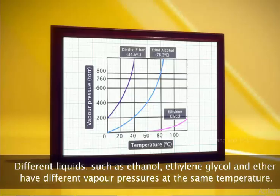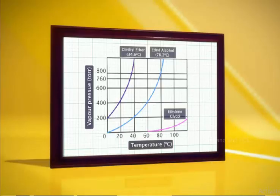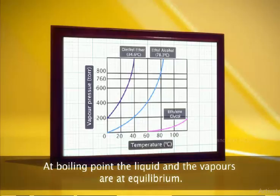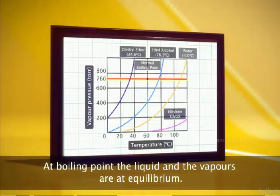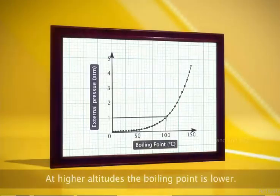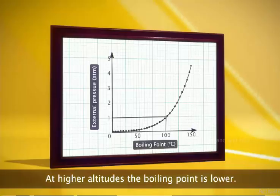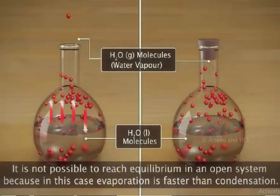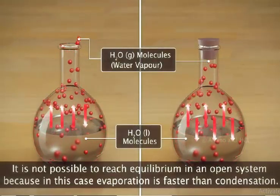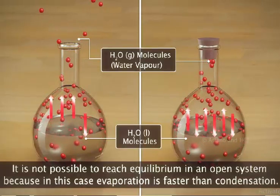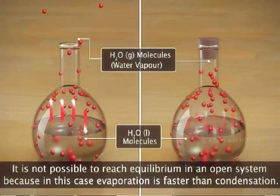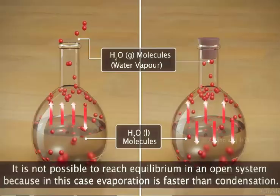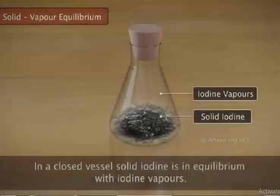Vapor pressure increases with temperature. Different liquids such as ethanol, ethylene glycol, and ether have different vapor pressures at the same temperature. The liquid with higher vapor pressure is more volatile and has a lower boiling point. For any pure liquid at one atmospheric pressure, the temperature at which the liquid and vapors are at equilibrium is called the normal boiling point. For water, it is 100 degrees Celsius. The boiling point of a liquid also depends on atmospheric pressure and altitude — at high pressure, the boiling point increases. In water kept in an open atmosphere, evaporation is faster than condensation, and vapors mix with air, so equilibrium cannot be reached in an open system.